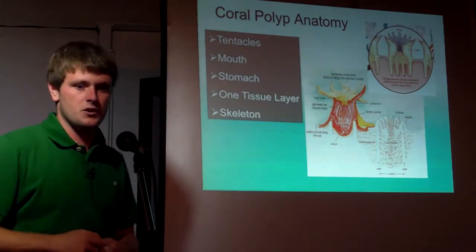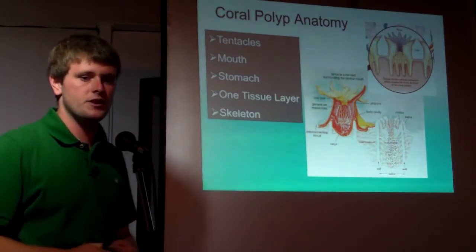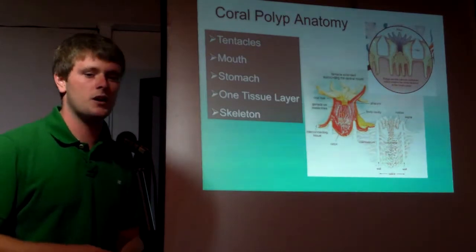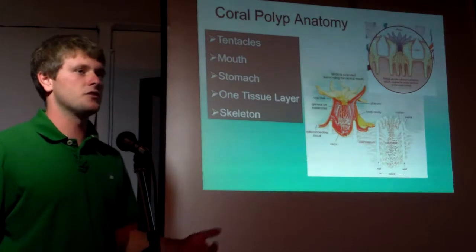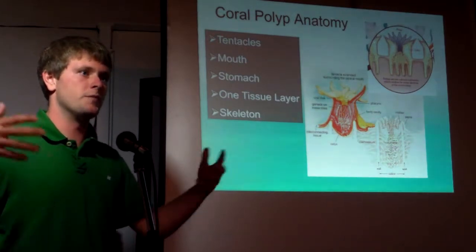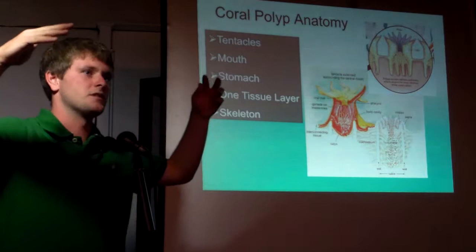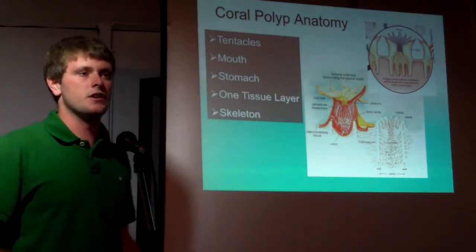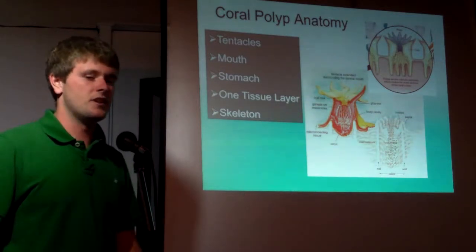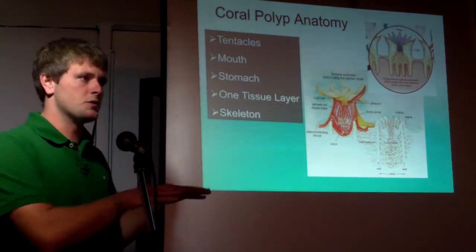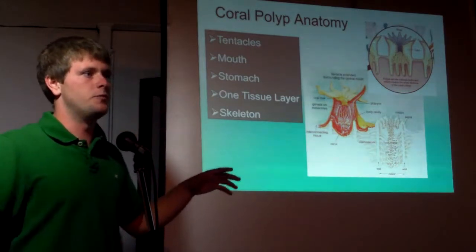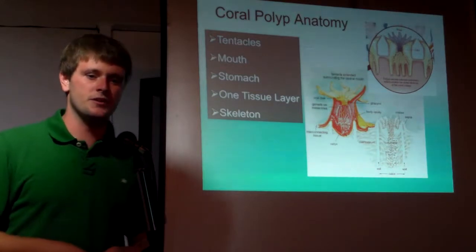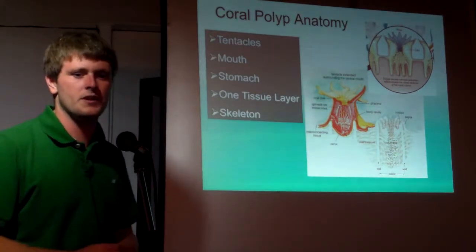Stony corals have another unique feature: they're calcifying organisms, so they create a calcium carbonate skeleton. It's an external skeleton — just a structure they build to get closer to sunlight, lay out branches, feed on plankton floating around the ocean. All the polyps live on the outer surface, so if you break one open, you'll see nothing living inside — just empty minerals, unless you find a burrowing organism.